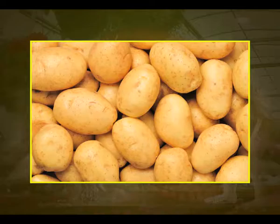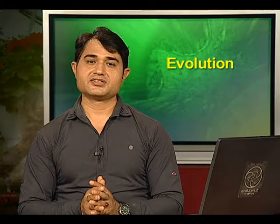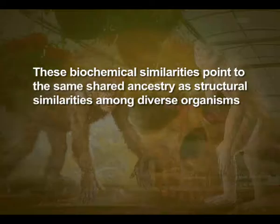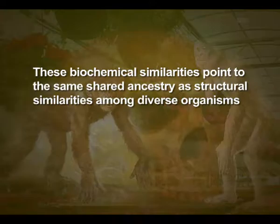Sweet potato with root modifications and potato with stem modifications is another example of analogy. In the same line of argument, similarities in proteins and genes performing a given function among diverse organisms give clues to common ancestry. These biochemical similarities point to the same shared ancestry as structural similarities among diverse organisms.